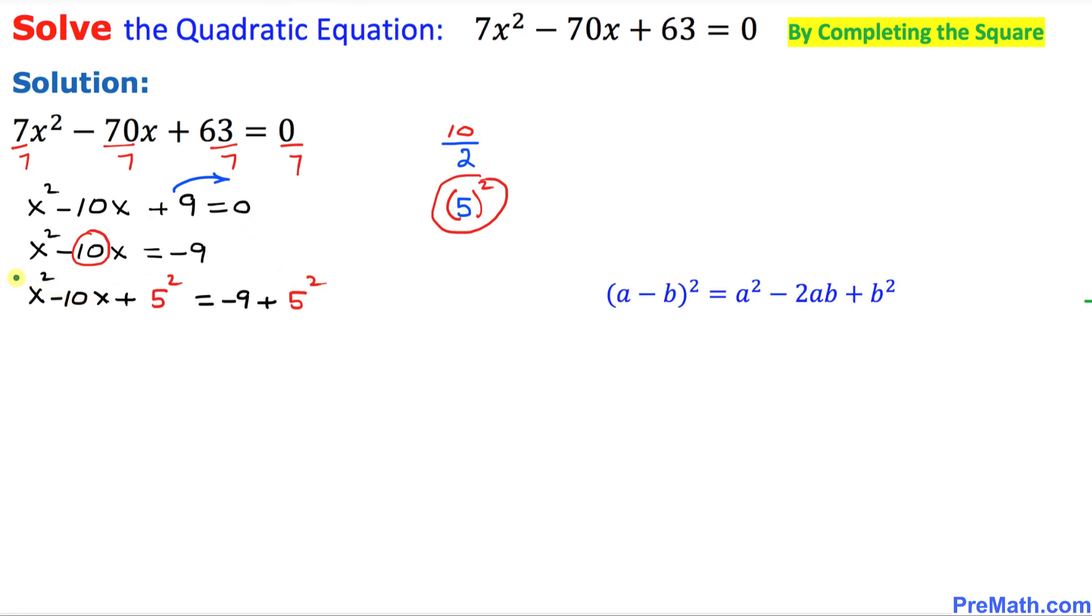Now let's focus on this left hand side. This represents a complete square of x minus 5 squared, and by the way we are using this fact to complete this square: a minus b squared is always equal to a squared minus 2ab plus b squared. So that's the reason we got this one, and on the right hand side we got negative 9 and 5 squared is simply 25.